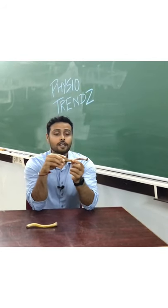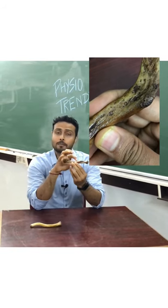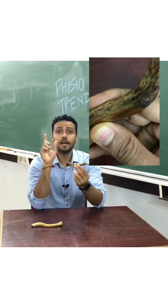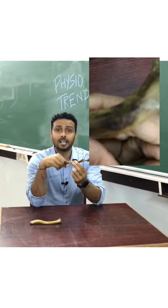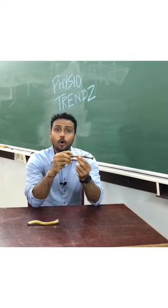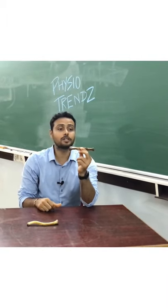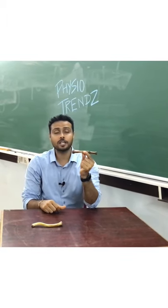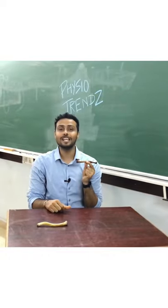Third point: from the inferior border we can see the subclavian groove as well as the conoid tubercle, and we can hold it in anatomical position with the help of the thumb and index finger on whichever side the bone is.